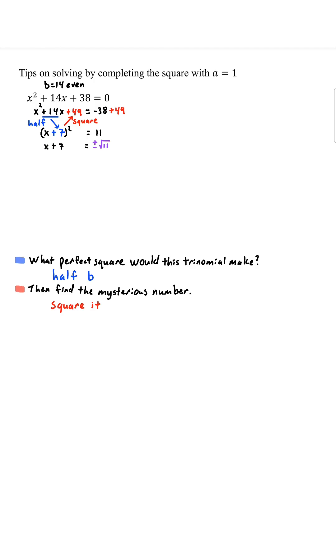Now negative 38 plus 49 is 11. Square both sides. Don't forget the plus minus. Subtract 7 on both sides. So x is equal to negative 7 plus or minus square root of 11. If you want, you can separate the two solutions.